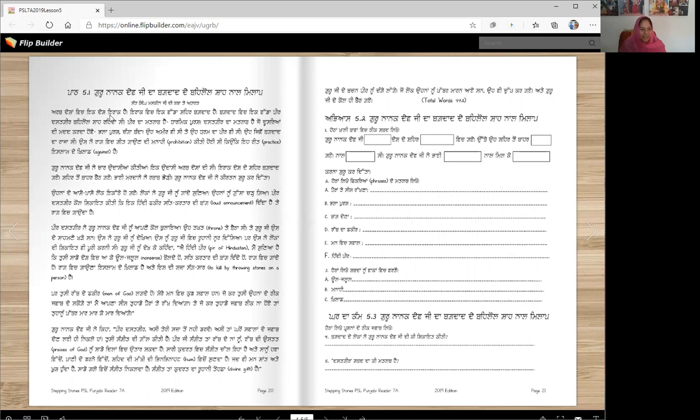Arb desha vich ek desh Irak hai. Irak vich ek vada šeher Bagdad hai. Bagdad vich ek vada peer, dastgeer, behlol shah renda si. Peer is the saint, right?